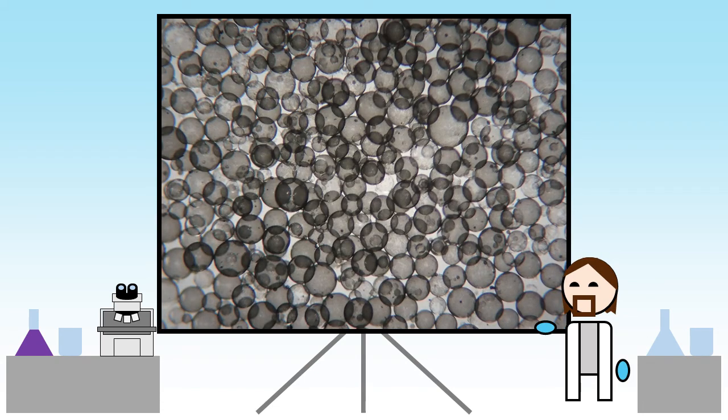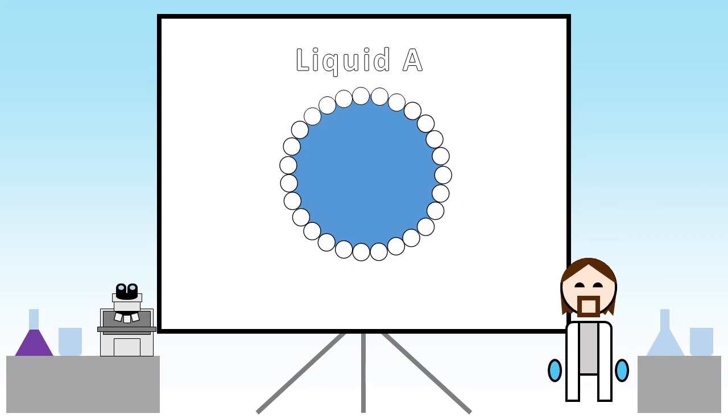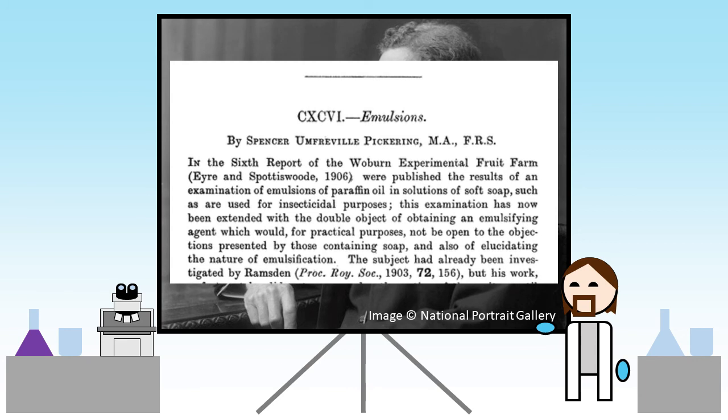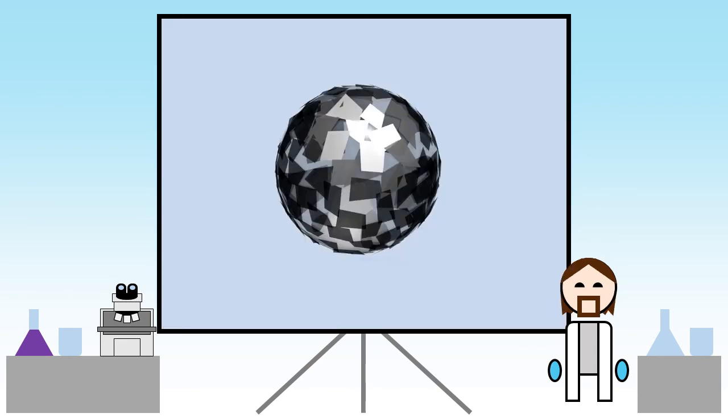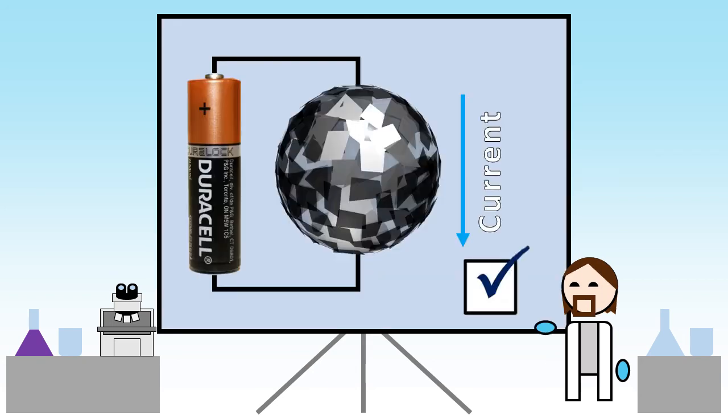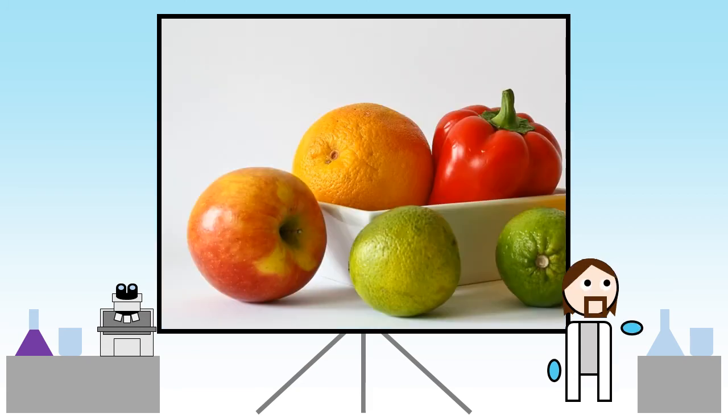An emulsion stabilized by solid particles instead of surfactant molecules is called a Pickering emulsion, named after Percival Spencer Umpherville Pickering, who published a paper on the effect in 1907. What you get is tiny graphene shells that form around the droplets. Because graphene is really electrically conductive, this means the droplets can conduct electricity too.